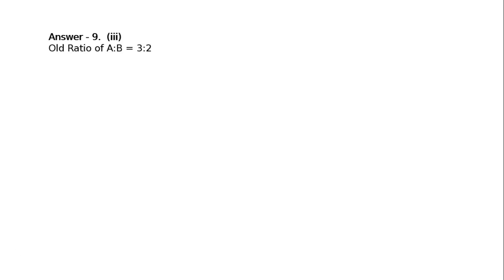Third part, question 9. A and B are partners sharing profits and losses in the ratio of 3:2. They admit C for one-fifth share in the profit. C acquires one-fifth of his share from A and four-fifths from B. Old ratio of A to B is 3:2. A's new share: 3/5 minus (1/5 multiplied by 1/5). That is equal to 3/5 minus 1/25. LCM 25: 15 minus 1 equals 14/25.